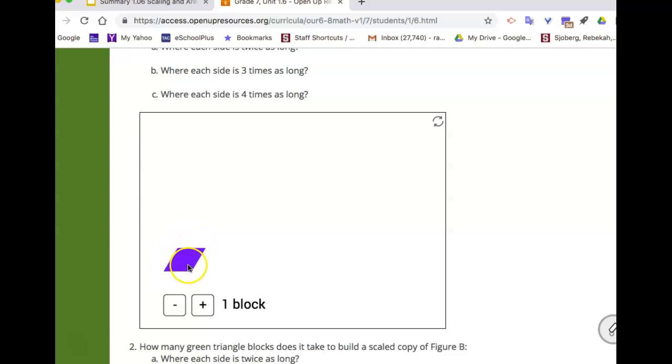So this has an area of one rhombus unit. If we wanted to increase the side lengths twice as big and create a similar figure, it actually took four blocks, not just two blocks.